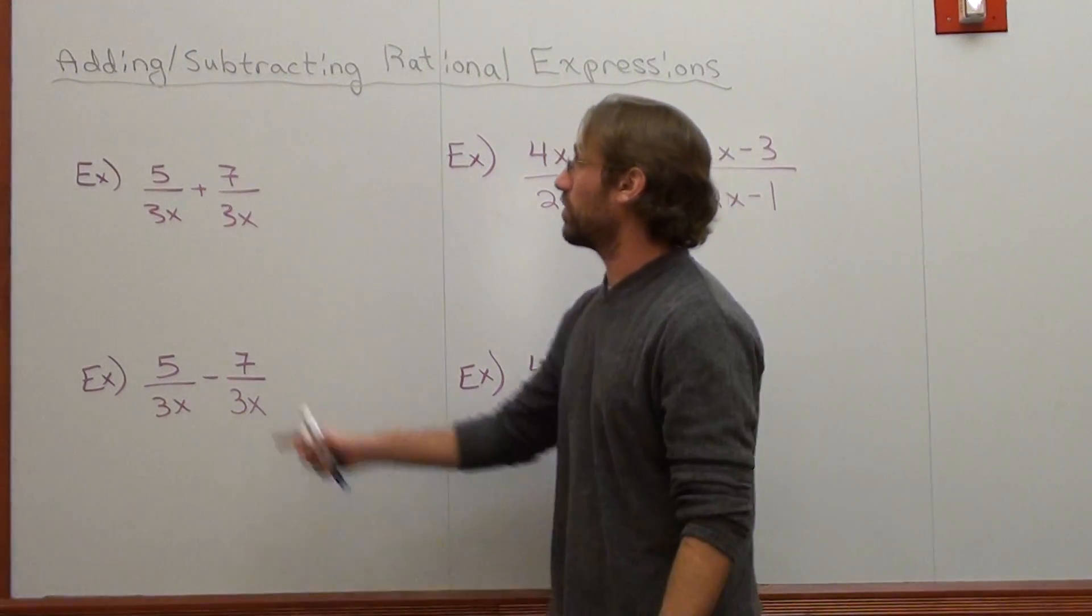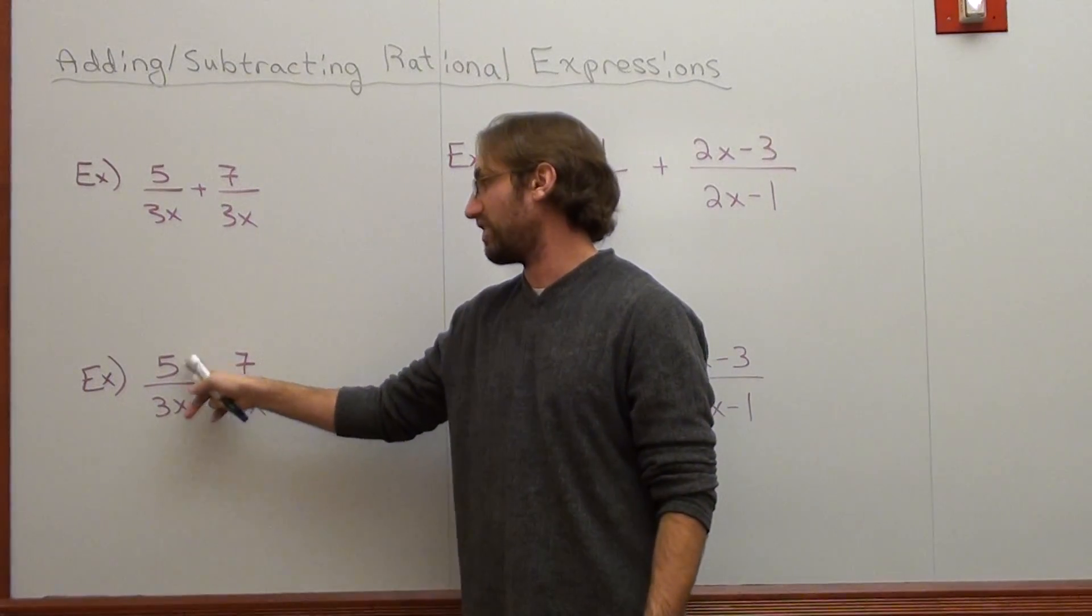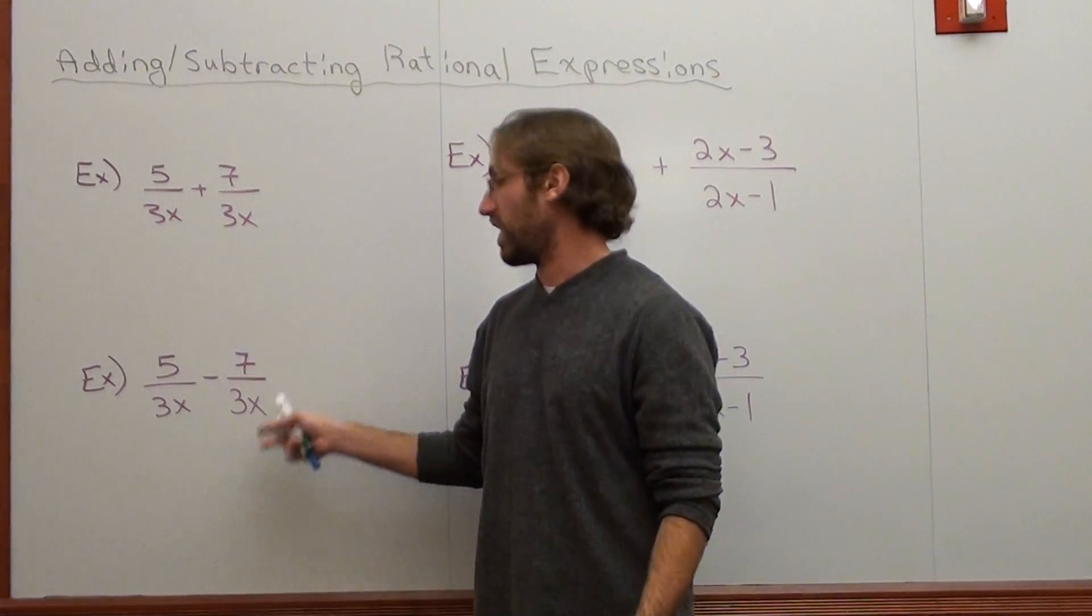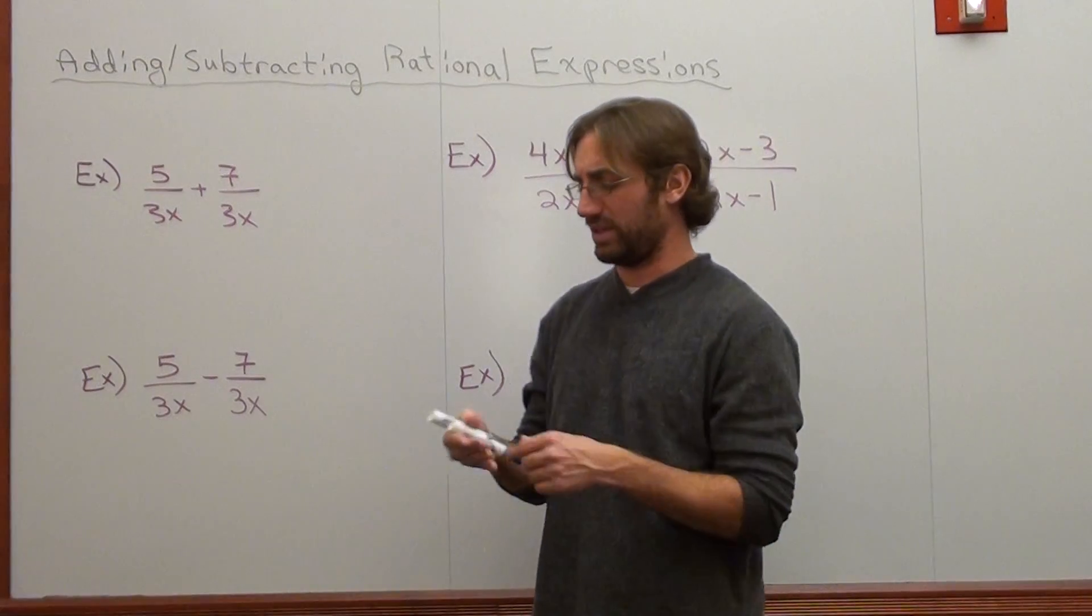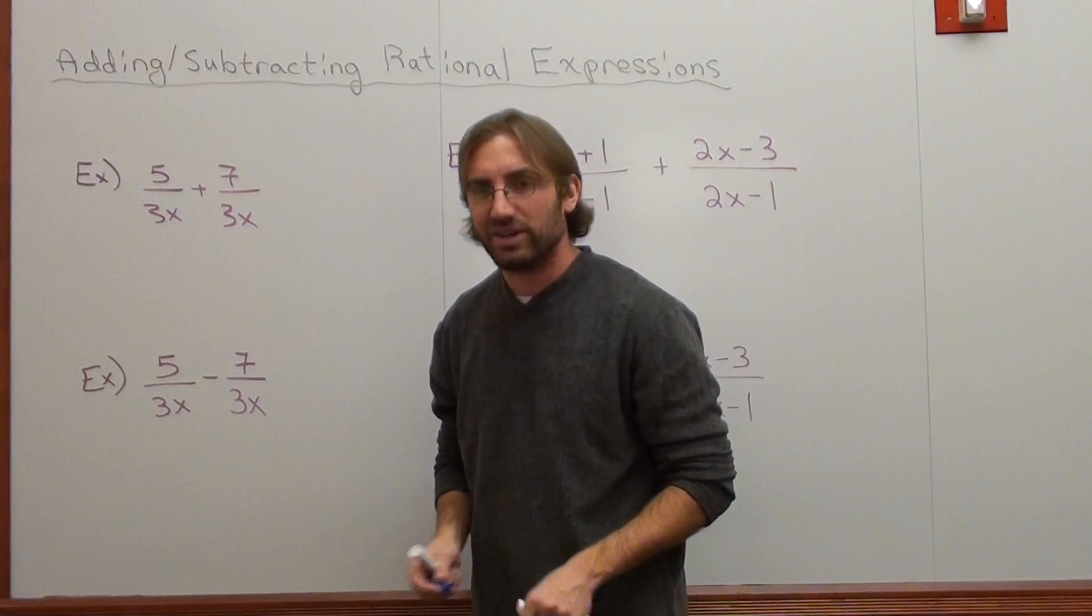So that's it. Let's go ahead and do the first one, which reads 5 over 3x plus 7 over 3x. And the next example I have is 5 over 3x subtracted by 7 over 3x. Not a big deal. The denominators are the same, so I can add or subtract.